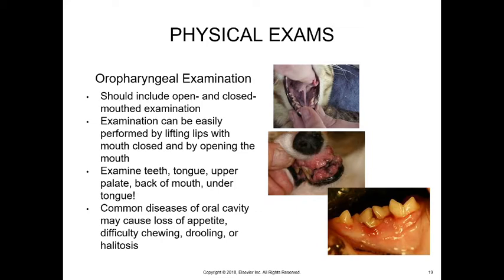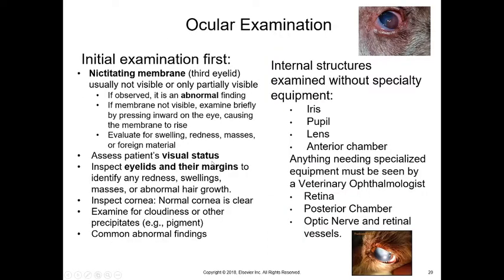There are common diseases of the oral cavity that can cause loss of appetite, difficulty chewing, drooling, or halitosis — bad breath. One example shown is resorptive lesions along the teeth of a cat with very soft and reddened gum tissue and loss of tooth. Another shows growth in a dog's mouth with periodontal disease. Looking under the tongue is also important — it's an area where we often find string foreign bodies or masses.